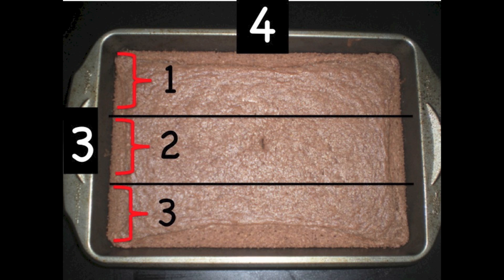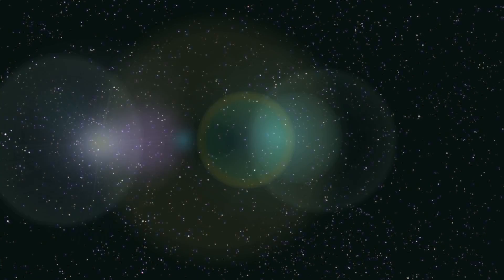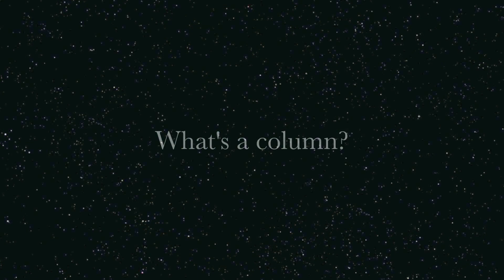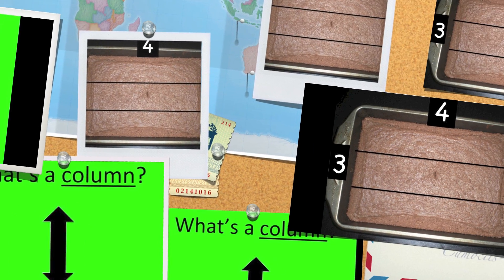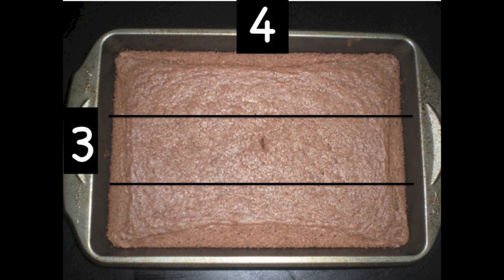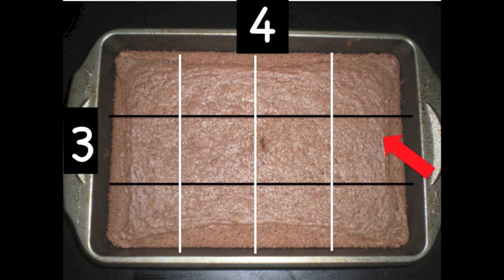Now, let's divide our brownie into columns. What's a column? Columns are parts of a shape that go up and down. I'm going to put columns on top of the rows that I've already cut into my brownie. I will divide my columns with the color white. We've got 1 column, 2 columns, 3 columns, and 4 columns.